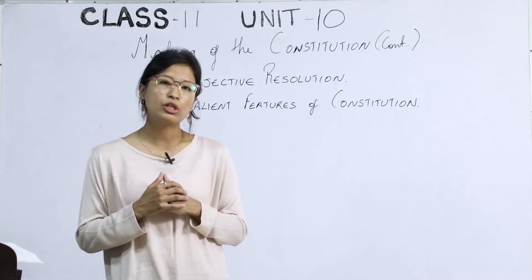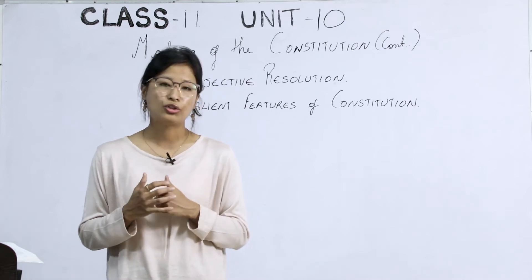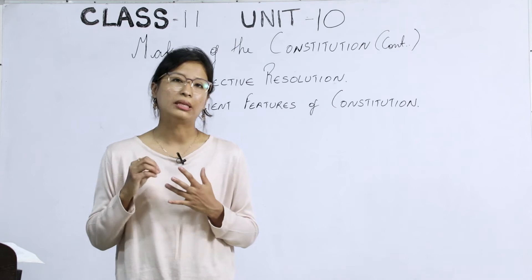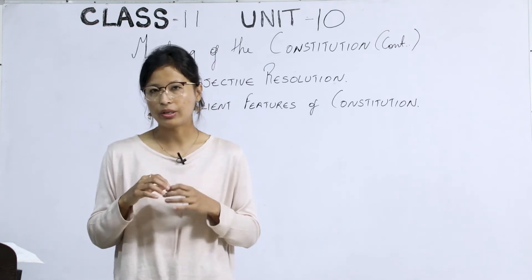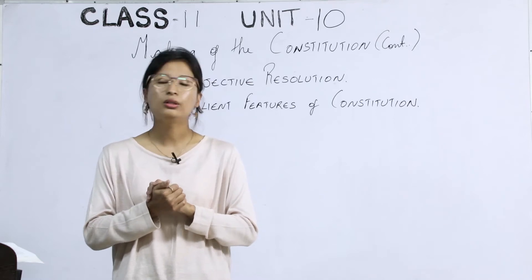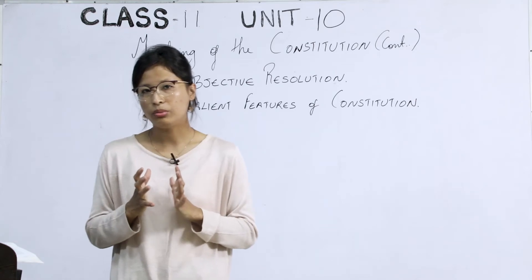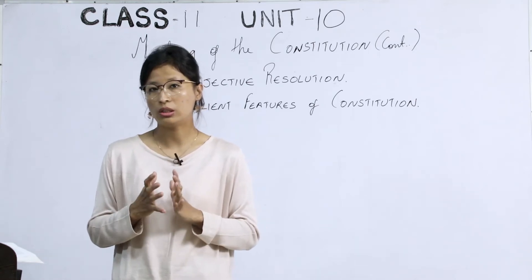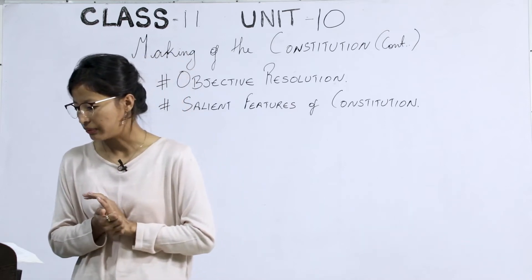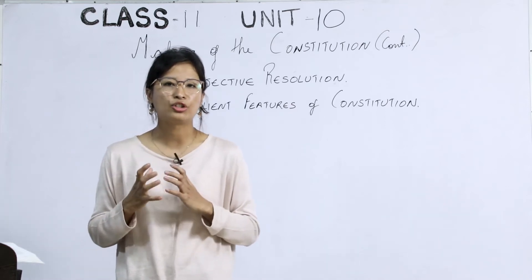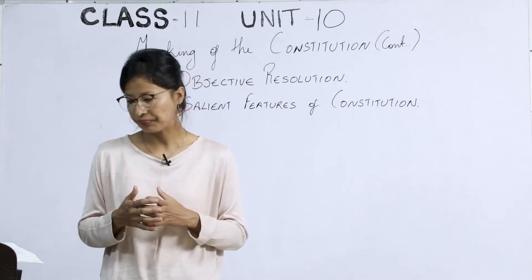Point number six talks about integrity of territories. Sovereign India should have sovereign power over the territory — land, air, and water — and this should be maintained according to the justice of a civilized state. Point number seven: this ancient land, referring to India, should make full contribution towards maintenance of world peace and welfare of mankind.